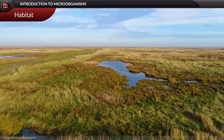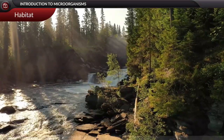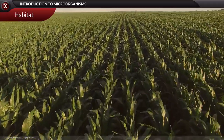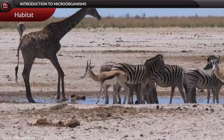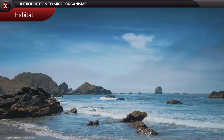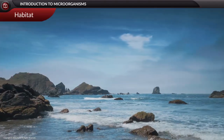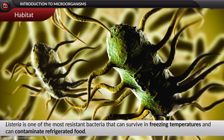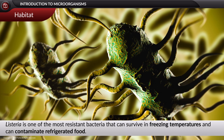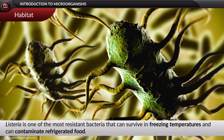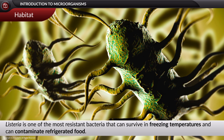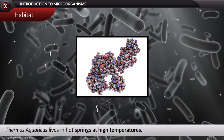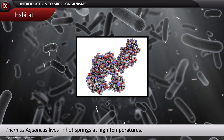Regarding habitat, microorganisms are omnipresent — that is, they are found in water, air, soil, and inside and outside of plants and animals. Microorganisms can withstand diverse habitats from cold oceans to hot springs. For instance, Listeria is one of the most resistant bacteria that can survive freezing temperatures and can contaminate refrigerated food. Likewise, Thermus aquaticus is a bacteria that lives in hot springs at high temperatures.